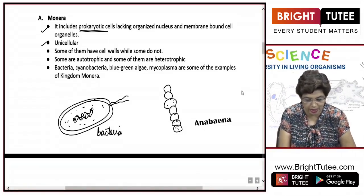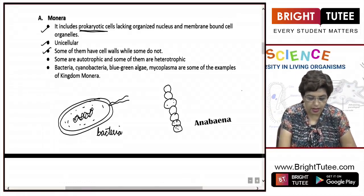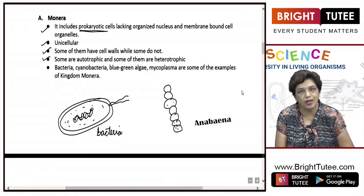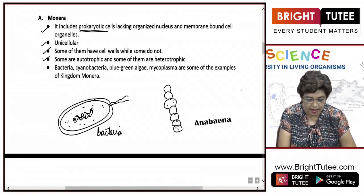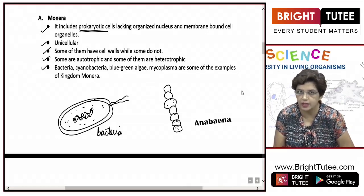All the Monera are unicellular. Some of the Monera have cell walls while others do not. Some of them are autotrophic while others are heterotrophic. Examples include bacteria, cyanobacteria, blue-green algae, and mycoplasma.